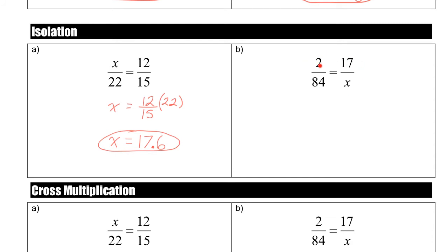This next proportion we're going to solve using isolation again. But notice this time x is on the bottom. So you don't want to multiply both sides by 17. That's not going to work. So isolation, what I did over here, only really works when the variable is on the top.